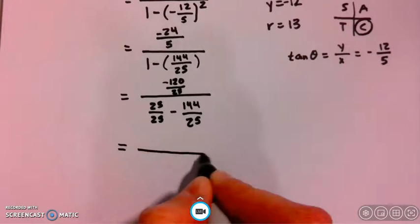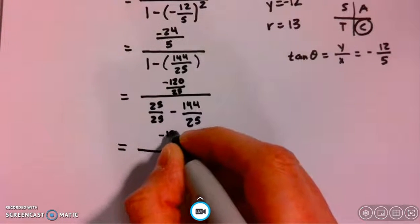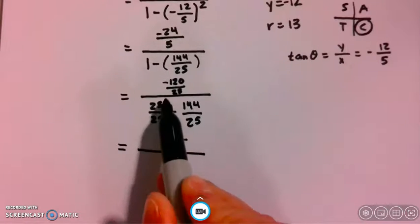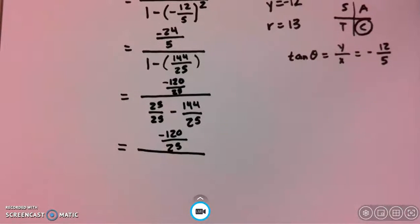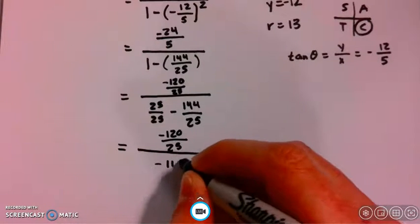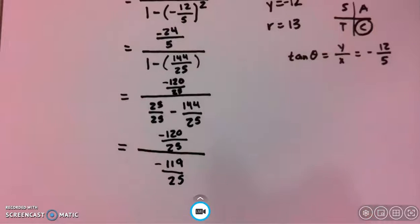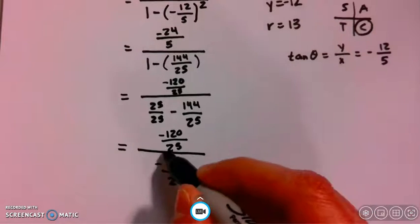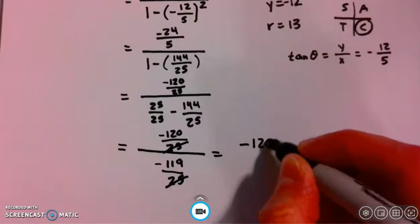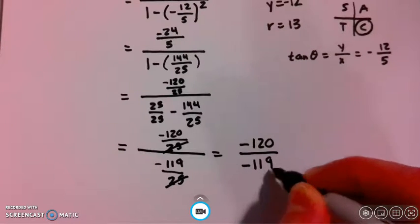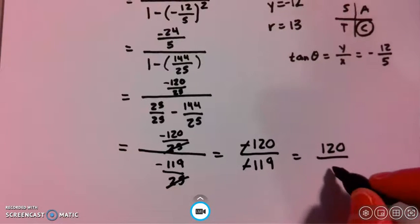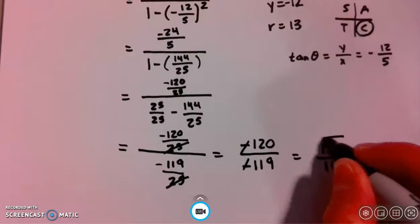Negative 120 over 25. Here, because I have my common denominators, I can just do 25 minus 144 and we get negative 119 over 25. Because we have the same denominator, those cancel. And we end up with negative 120 all over negative 119. Those negatives cancel, and our final answer is 120 over 119.